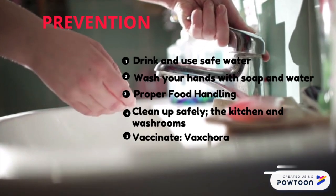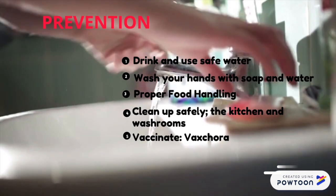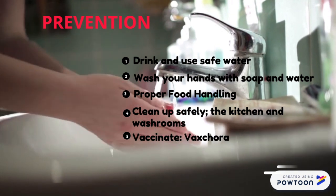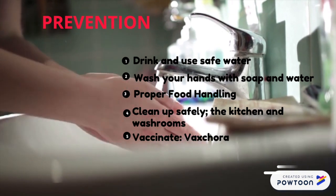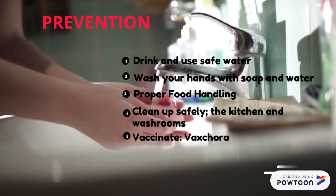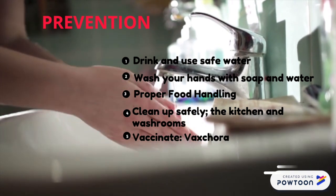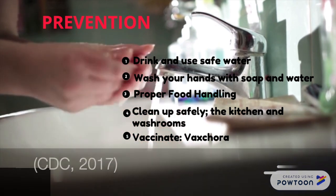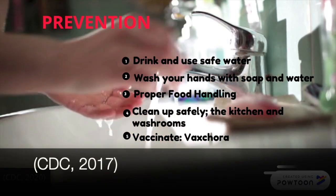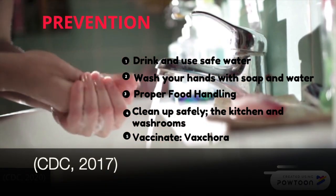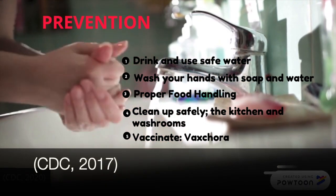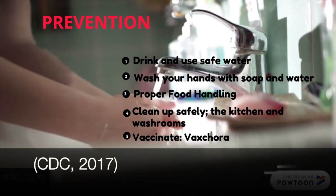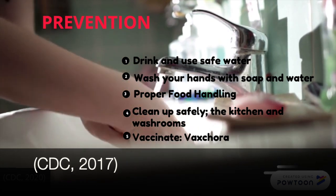According to the CDC, prevention can be achieved in five ways: number one, drink and use safe water; number two, proper washing of hands with soap and water; number three, proper food handling; number four, clean up safely, such as in the kitchen and washrooms; and number five, speak to your doctor about vaccination.